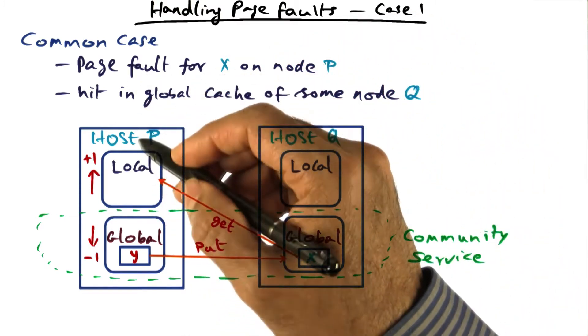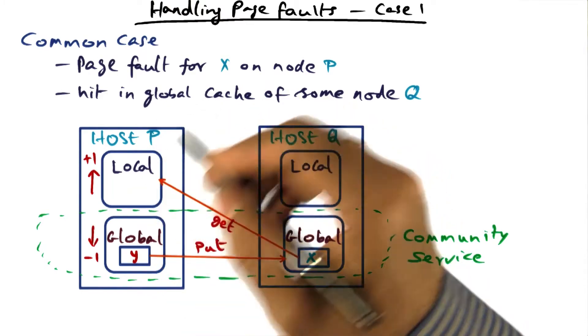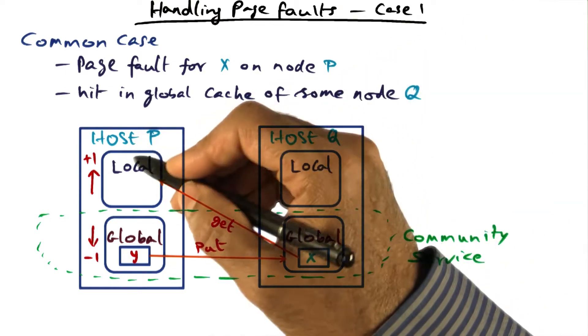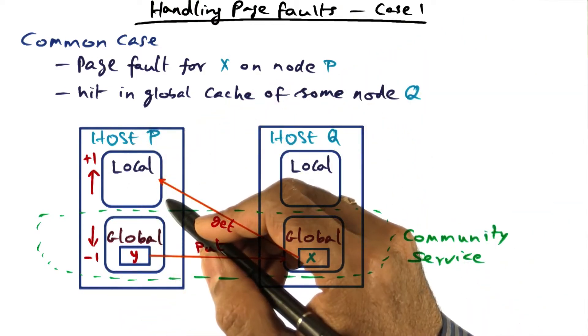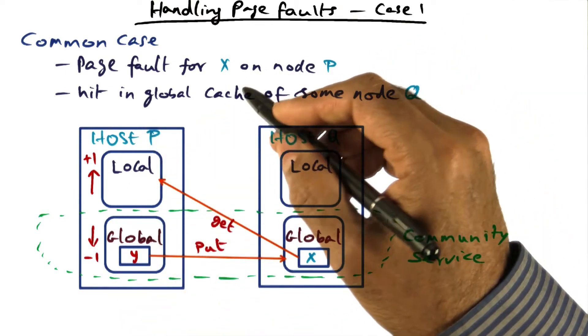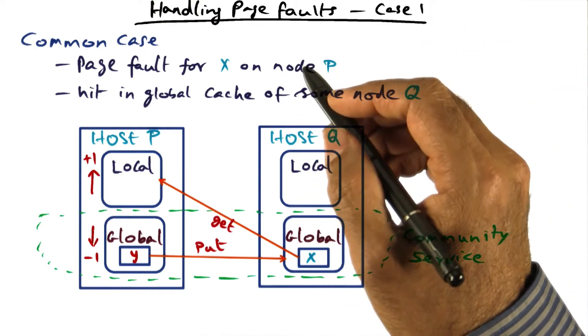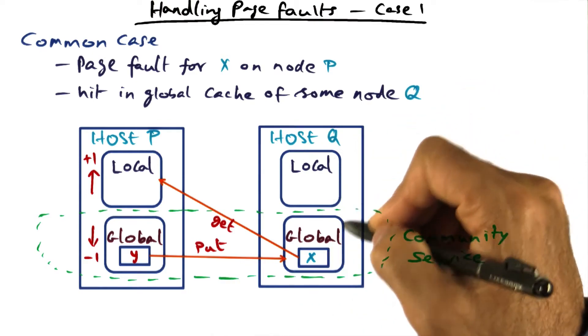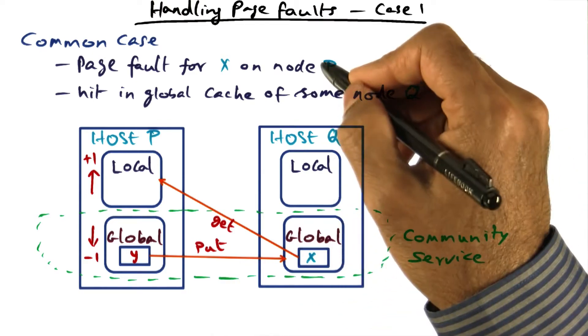So the most common case is that I'm running a process on P and it page faults on some page X. When that happens, we have to find out if this page X is in the global cache of some node in the cluster. Let's say that this page happens to be in the global cache of node Q.